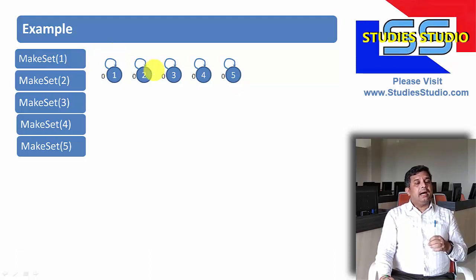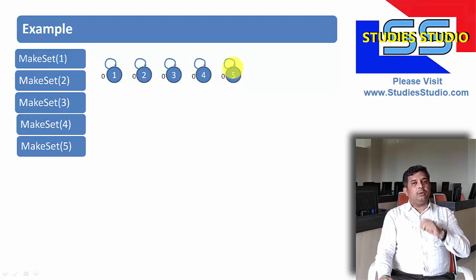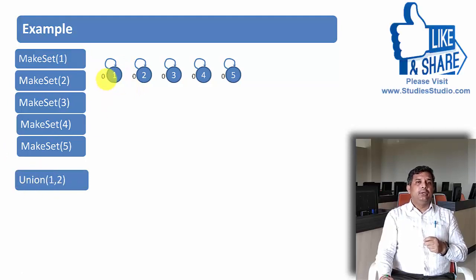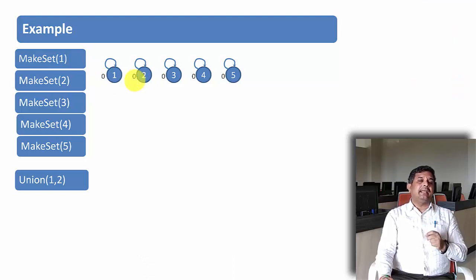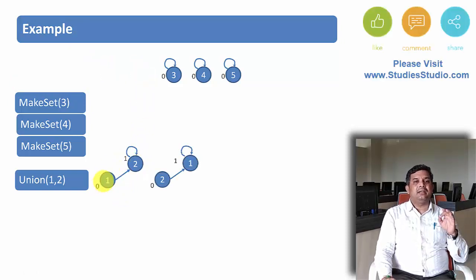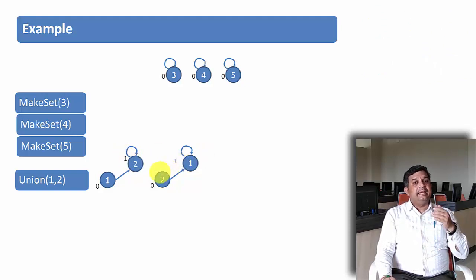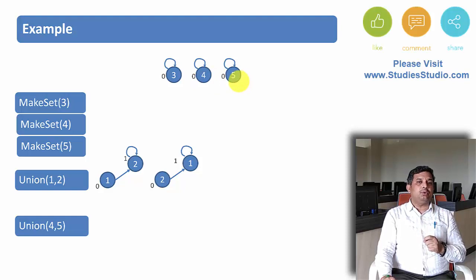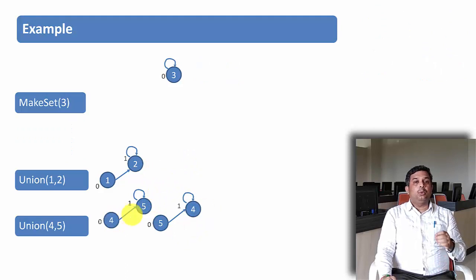One is root of itself, so there is a self loop over each element. Every element is a disjoint set and is the representative of itself. So when I did make set of 1, 2, 3, 4, 5, I have represented it this way — all with rank 0. Now union of 1 and 2: both have rank 0, so 2 can be the parent of 1 or 1 the parent of 2. The rank of the representative increases by 1. Next, union of 4 and 5: both have rank 0, so either representation is valid, and the representative's rank increases by 1.